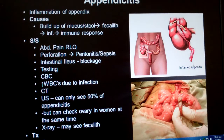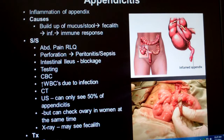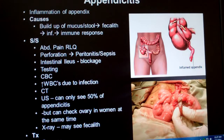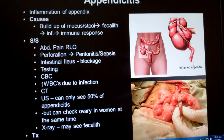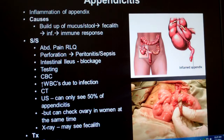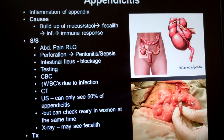Since appendicitis may not be the problem, ultrasound is a good choice in women because an ovary might be the problem — you can just move the wand over a bit and check those while you're at it. We might be able to see a fecalith on an x-ray, and it's cheap. Currently, surgery is the treatment of choice because we can get away with very little invasive evidence afterward taking out an appendix.